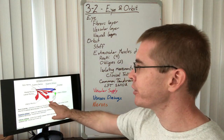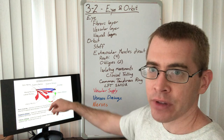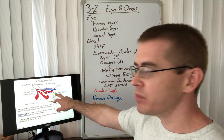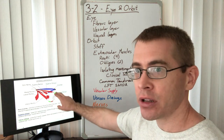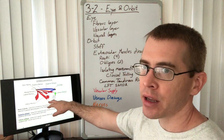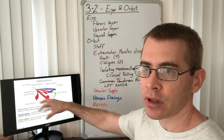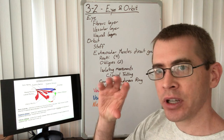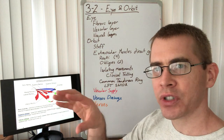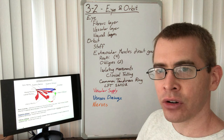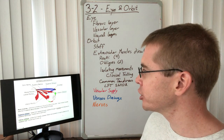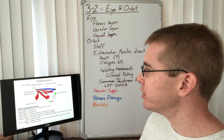The inferior oblique muscle attaches medially on the orbit, travels underneath the eye, and attaches inferiorly and laterally. These oblique muscles can rotate the eye and facilitate other directional movements. We will see why they are needed for gaze direction shortly.